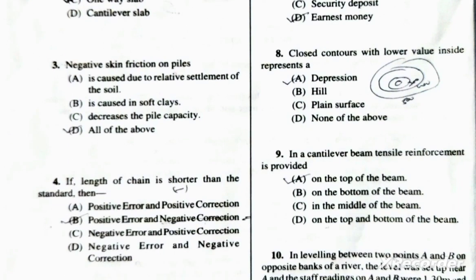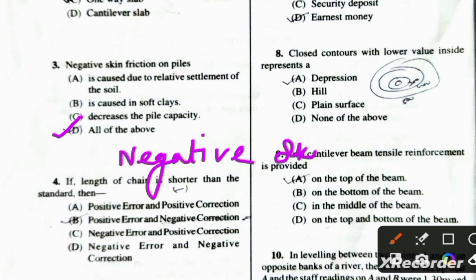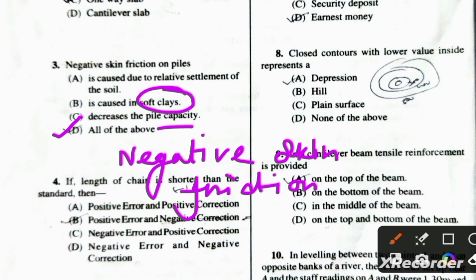The next question is about negative skin friction on piles. The correct option is D — all of the above. Negative skin friction is the phenomenon where skin friction acts downward on a pile due to soil settlement, causing a downward drag force. It reduces the pile capacity and is caused by relative settlement of the soil surrounding the pile. All three given options are correct.